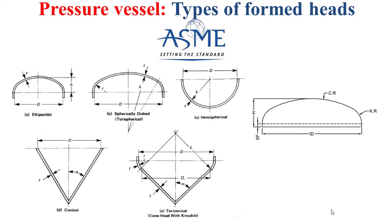Here we have the total height of the formed heads, denoted by H; the height of the straight face, denoted by SF; the crown radius, denoted by CR; the knuckle radius, denoted by KR; and the inner diameter of the formed head, denoted by ID.